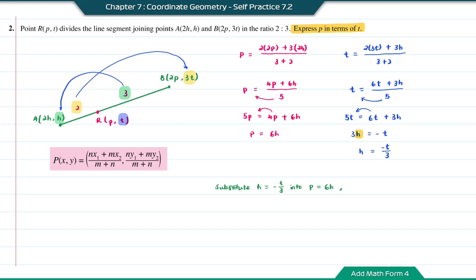Substituting H equal to negative T over 3 into the equation P equal to 6H gives P equal to 6 times negative T over 3. Simplifying the 3 and the 6, finally P is equal to negative 2T. We have now expressed P in terms of T.